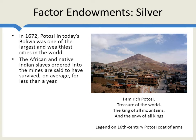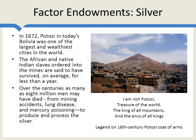These deposits were mined by African and native Indian slaves and low-skill, low-wage laborers, who were said to have survived on average in these mines for less than a year. Over the centuries, as many as 8 million men may have died from mining accidents, from lung disease, and from mercury poisoning, which was used to process and produce the silver. This was large-scale, industrial, hierarchical institutions based upon low-skill, low-wage labor — extractive institutions, literally extracting the silver and also extracting the lives from the workers.